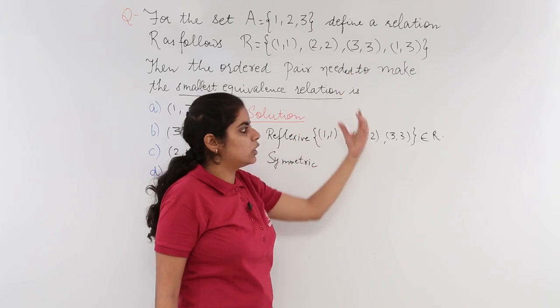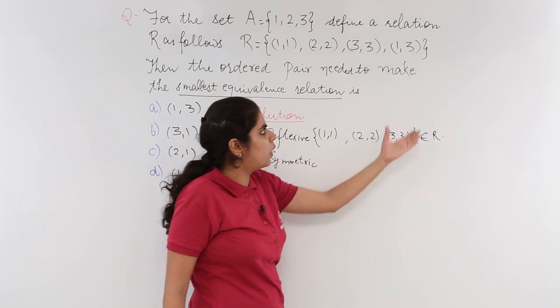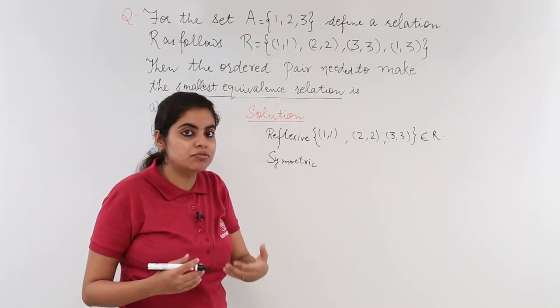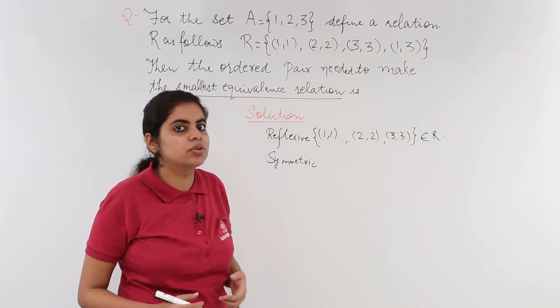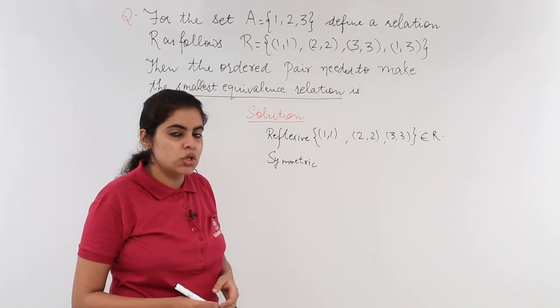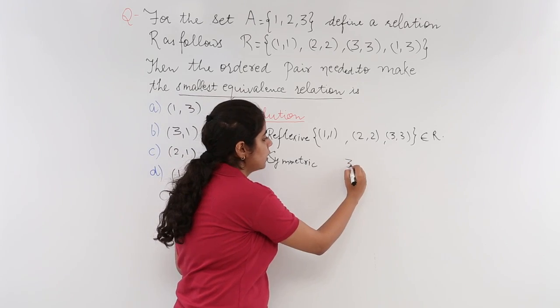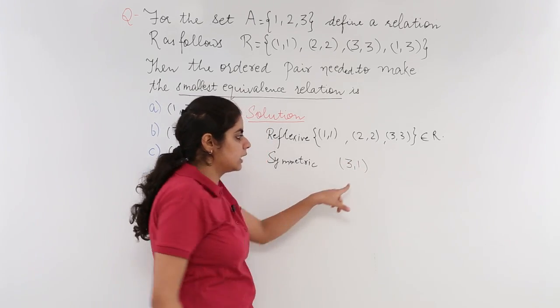(1,1), (2,2), (3,3) already covered. What about (1,3)? (1,3) will only have to be symmetric if (3,1) is also present. So, for symmetric, I need to add one ordered pair. That is (3,1). This is needed.